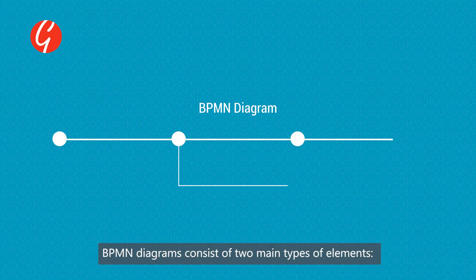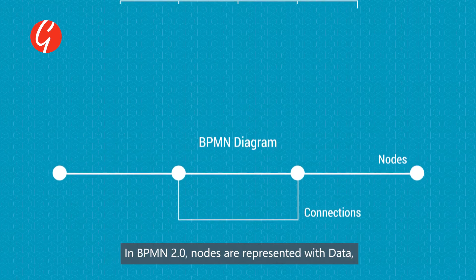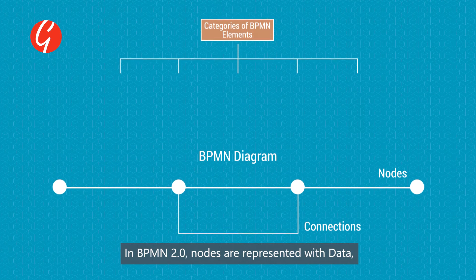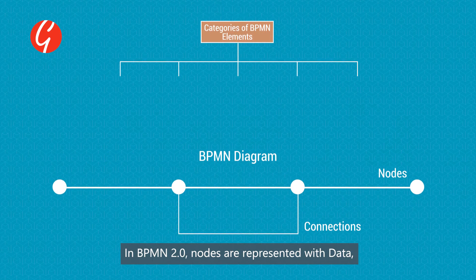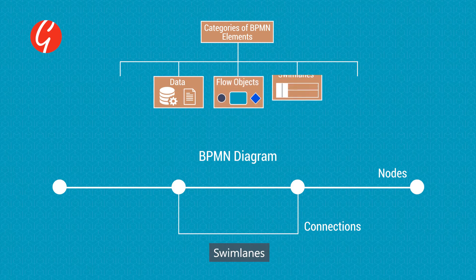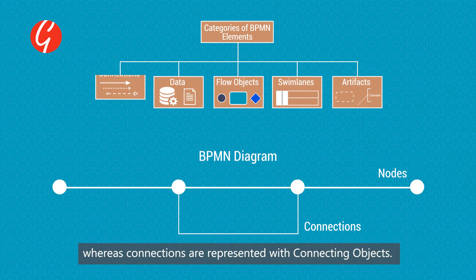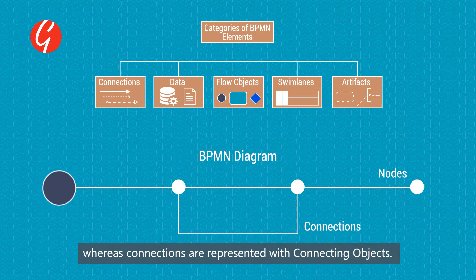BPMN diagrams consist of two main types of elements: nodes and connections. In BPMN 2.0, nodes are represented with data, flow objects, swim lanes and artifacts, whereas connections are represented with connecting objects.